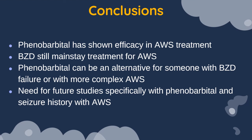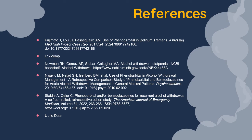In conclusion, phenobarbital has shown efficacy in AWS treatment. Benzodiazepines still remain the mainstay treatment for AWS, but phenobarbital can be used as an alternative for patients with benzodiazepine failure or a more complex history of alcohol dependence and AWS symptoms. There is a need for future studies specifically examining phenobarbital in patients with a seizure history and alcohol withdrawal syndrome, as this appears to be a gap where phenobarbital might find its place in AWS treatment. These are my references — please feel free to reach out via email with any questions. Thank you.